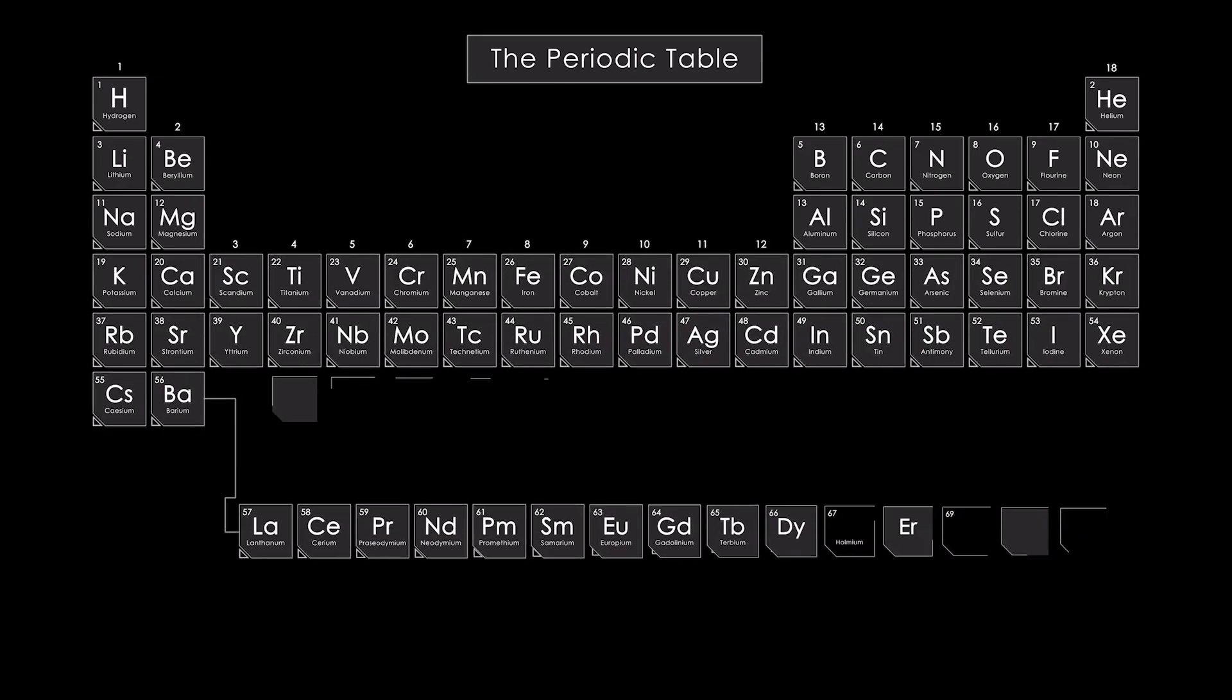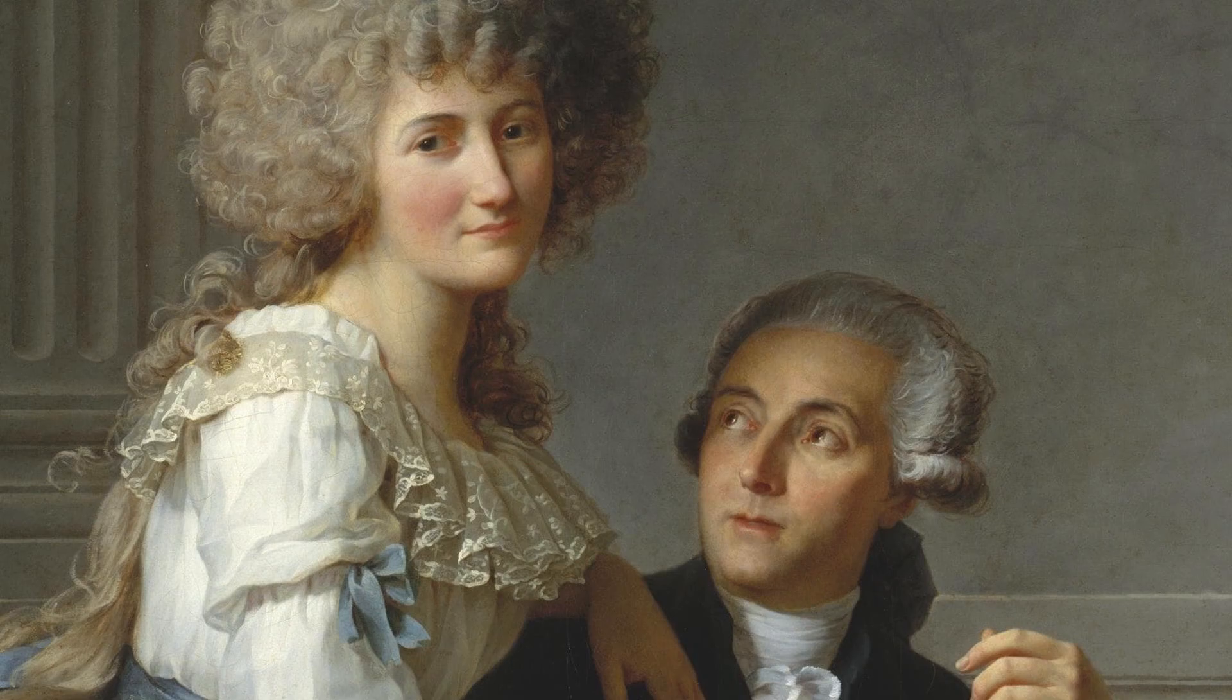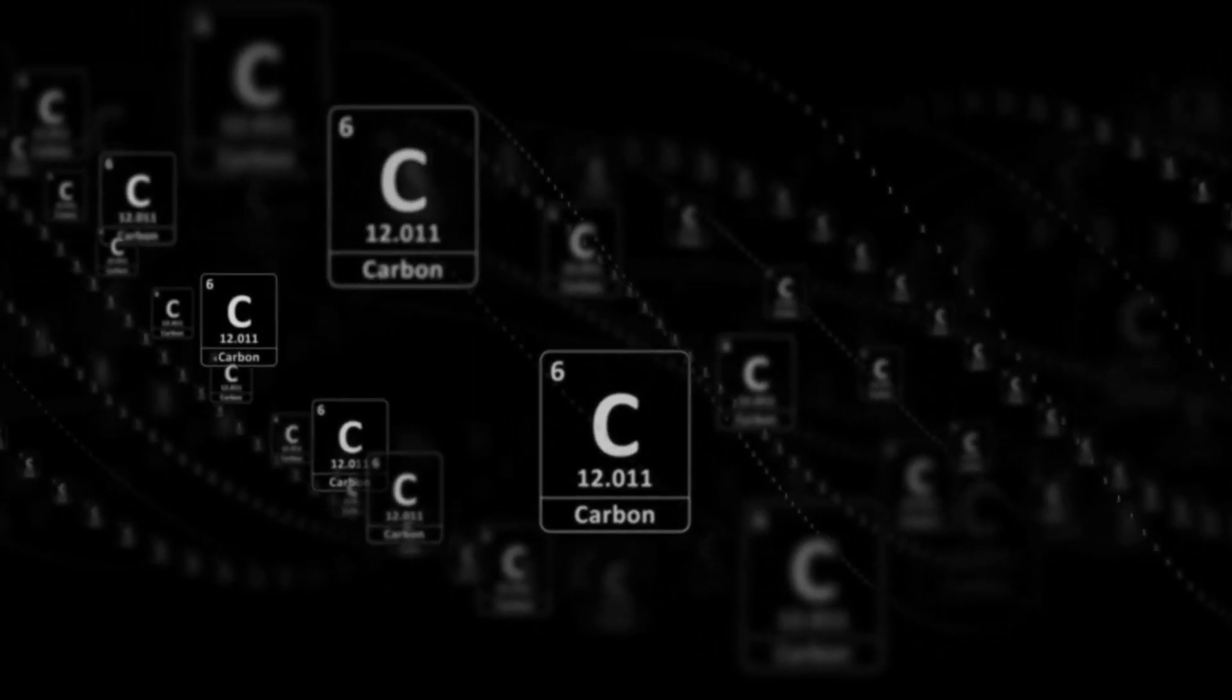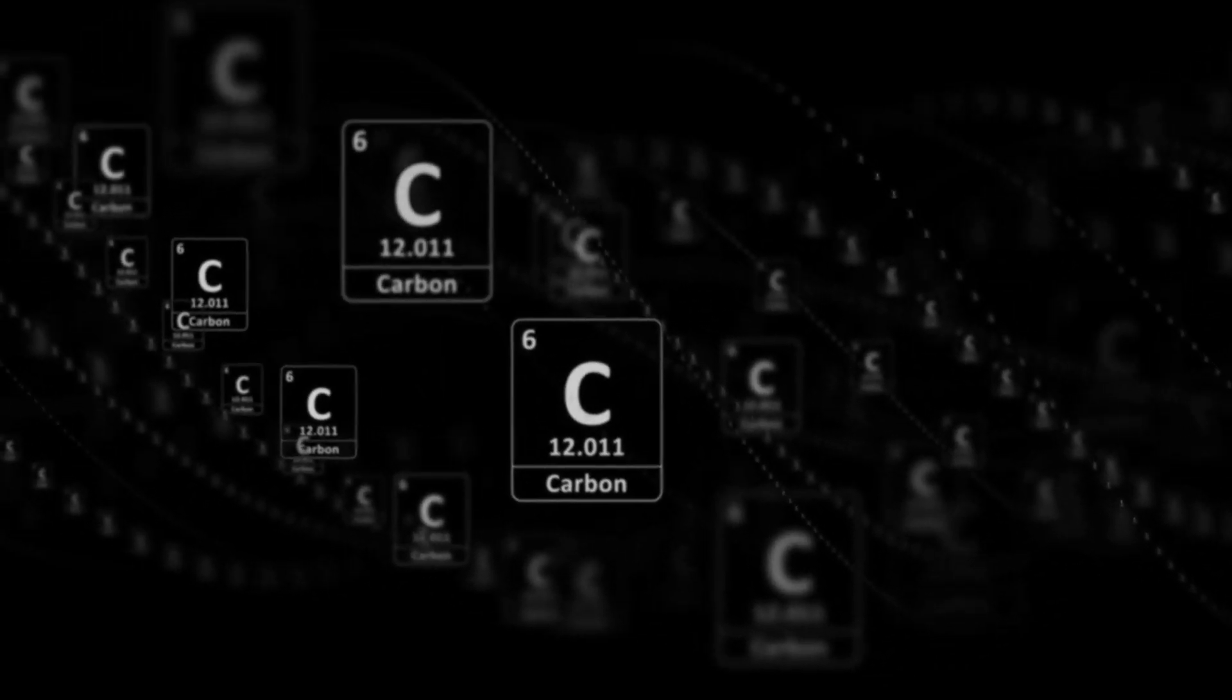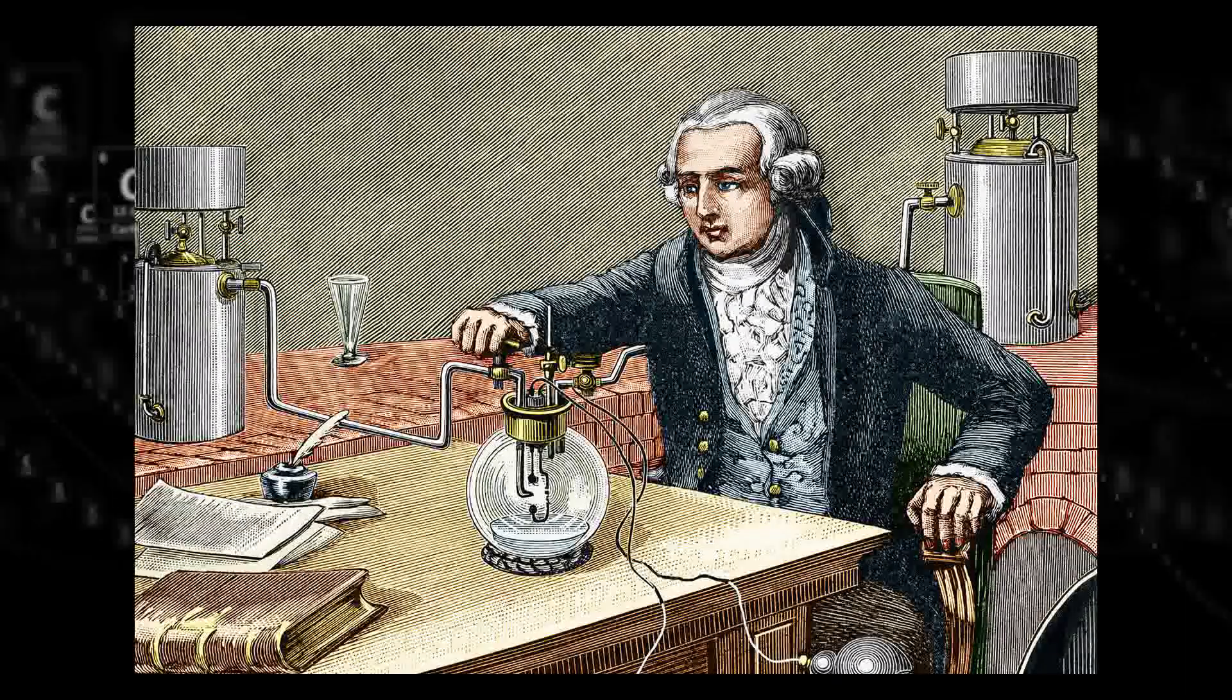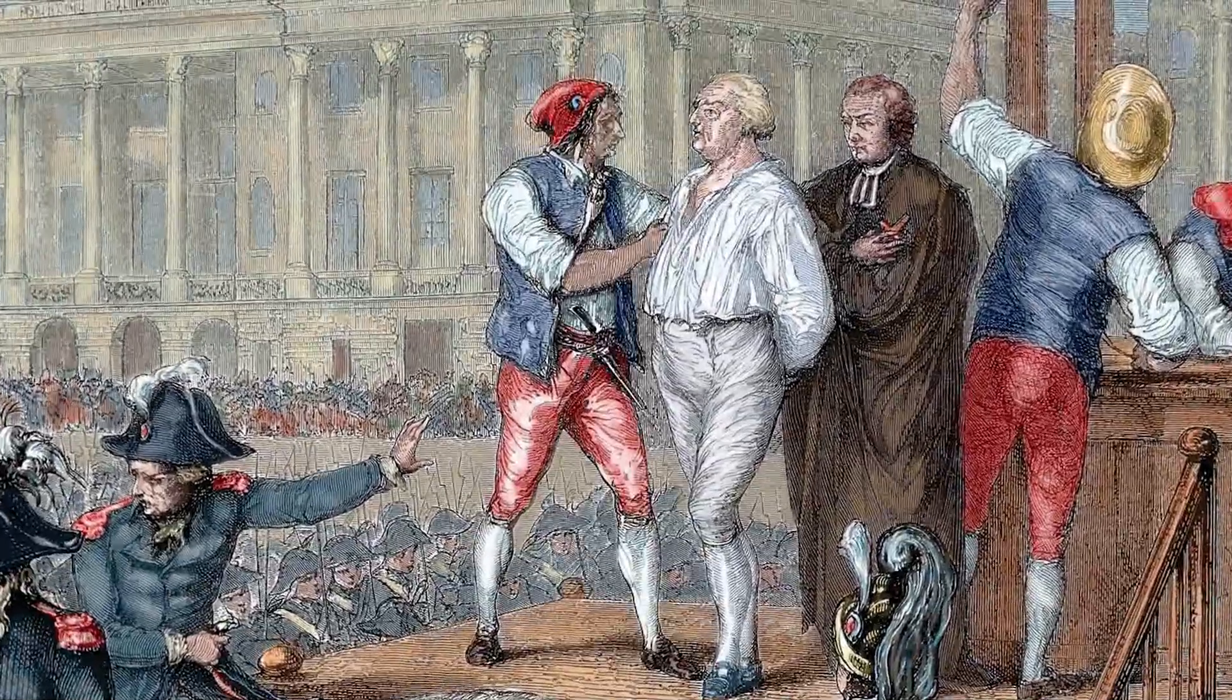Antoine Lavoisier named the element carbon in 1789 from the Latin word carbo, meaning charcoal. He was an interesting person. Lavoisier was a French nobleman who started what is sometimes called the Chemical Revolution. This was the early modern reformation of the core ideas of chemistry, primarily the law of conservation of mass and the oxygen-based theory of combustion. Some refer to Lavoisier as the father of modern chemistry. While he was starting the Chemical Revolution, he was also taking part in the French Revolution.